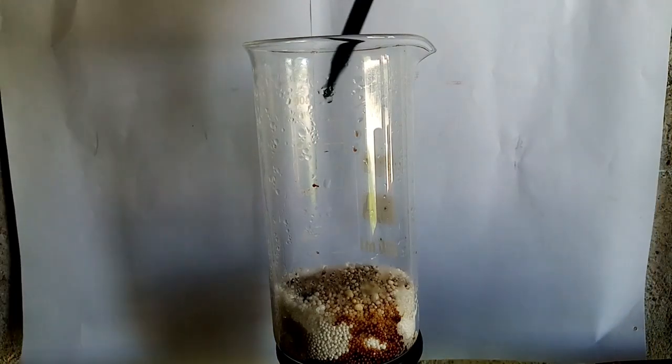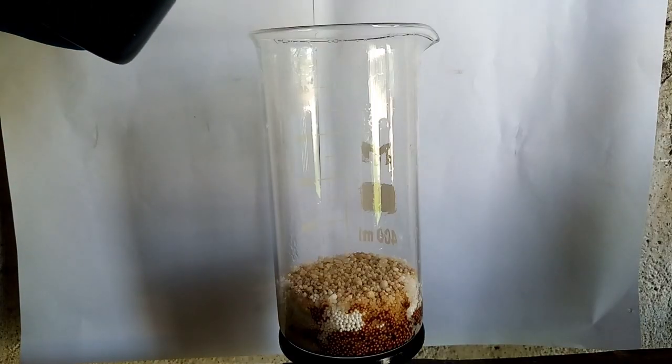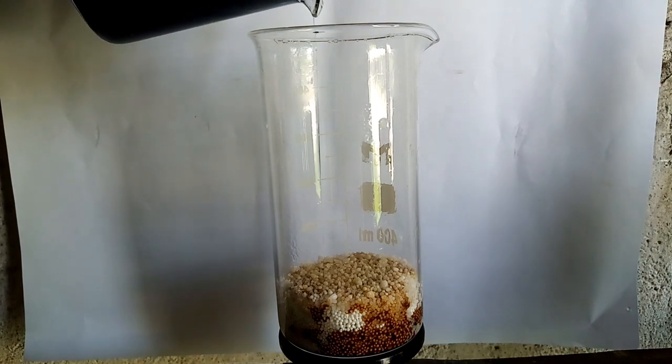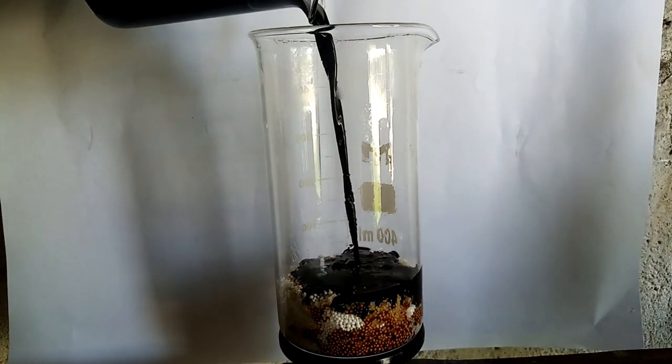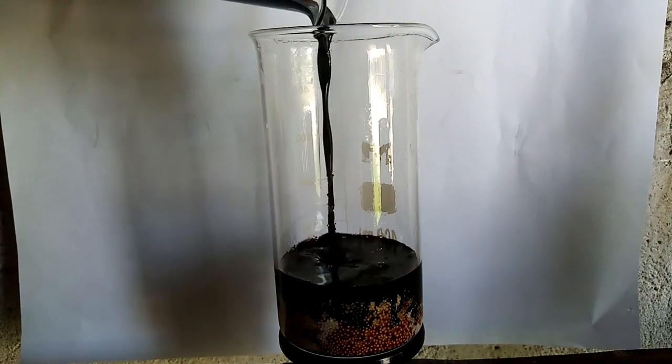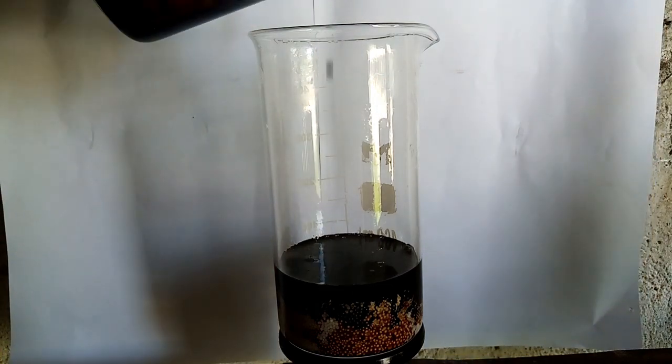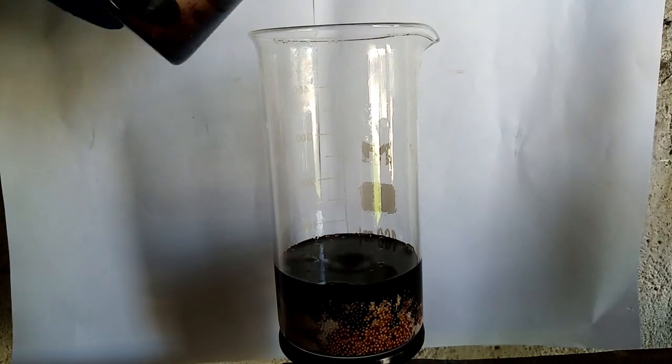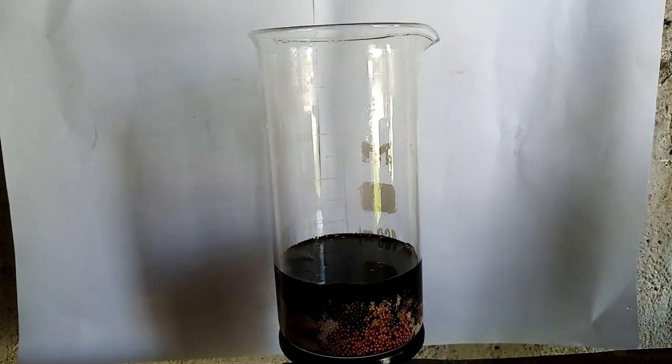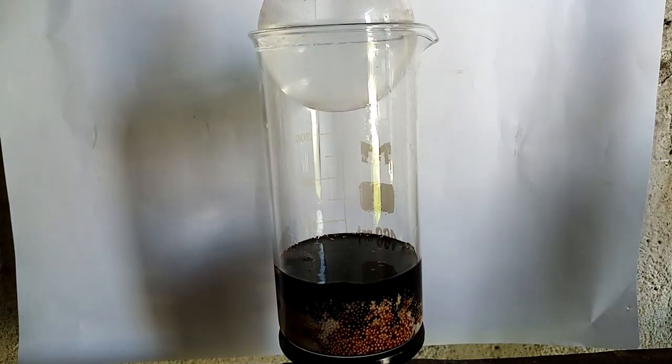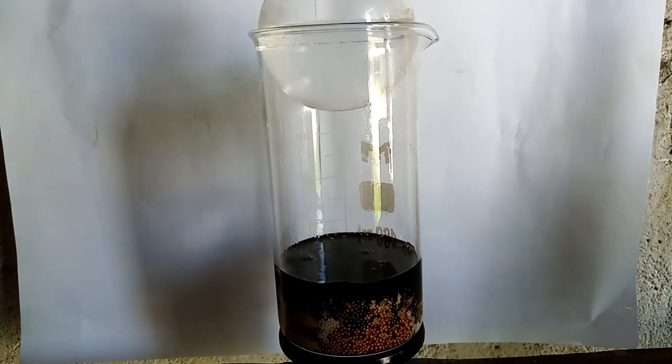After I see not really much is happening, I pour all of the acid. After I pour the acid, I take the boiling flask with cold water and put it on the beaker to prevent any vapor of nitric acid or nitrogen dioxide from escaping.